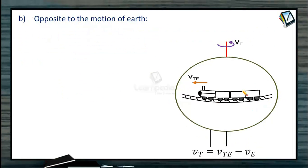If it is in the opposite direction, we subtract. Suppose it is taken in this opposite direction, then velocity of train with respect to center will be velocity of train minus the velocity of earth, but this direction is now opposite.